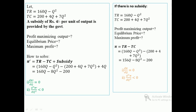Assume the total revenue function TR equals 160q minus q squared, total cost TC equals 200 plus 4q plus 7q squared, and a subsidy of rupees 4 per unit of output is provided by the government. We need to find the profit maximizing output, equilibrium price, and maximum profit. The profit function with subsidy is pi dash equal to TR minus TC plus subsidy, which simplifies to 160q minus 8q squared plus 200.